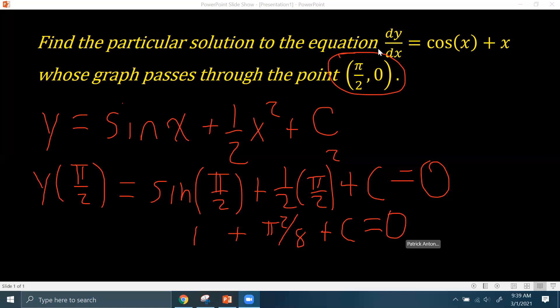Now I would advise you when you solve for c in the next step to not convert it to a decimal. Don't put one plus π²/8 into your calculator. Just solve the equation for c and it's okay that you get negative one minus π²/8.